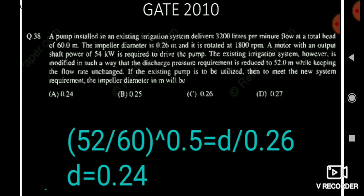To meet the new system requirement, we need the new impeller diameter. H1 = 60 m, H2 = 52 m, and D1 = 0.26 m are given; D2 is asked. Since pressure is proportional to diameter squared, we use: (H2/H1) = (D2/D1)², so (52/60) = (D/0.26)². Taking square root (power of 0.5), we calculate and get D2 = 0.24 meter.